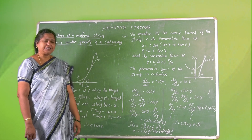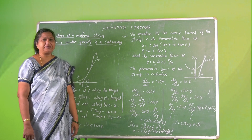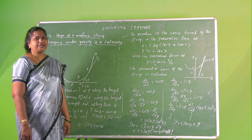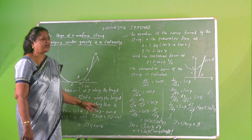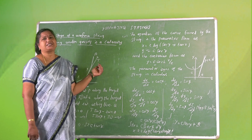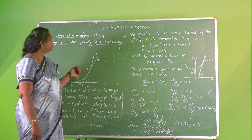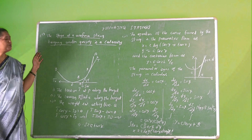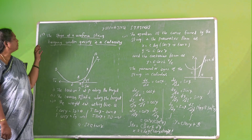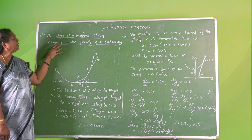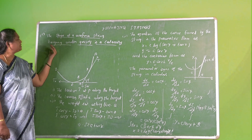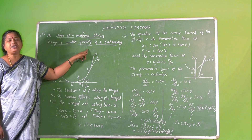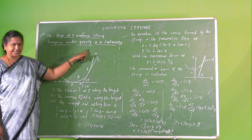I am Doctor Sarala, Department of Mathematics. I will now explain hanging strings. First, we have to show that the shape of a uniform string hanging under gravity is a catenary.